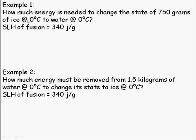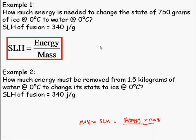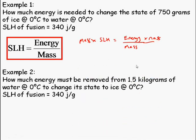Example 1. How much energy is needed to change the state of 750 grams of ice at 0 degrees Celsius to water at 0 degrees Celsius? Reasonably simple. Just use this formula. Rearrange it. Multiply both sides by mass. Cancel out the mass on this side. We have energy is equal to specific latent heat times mass.